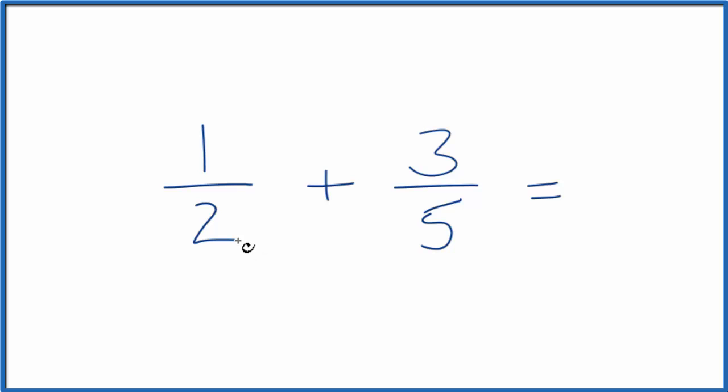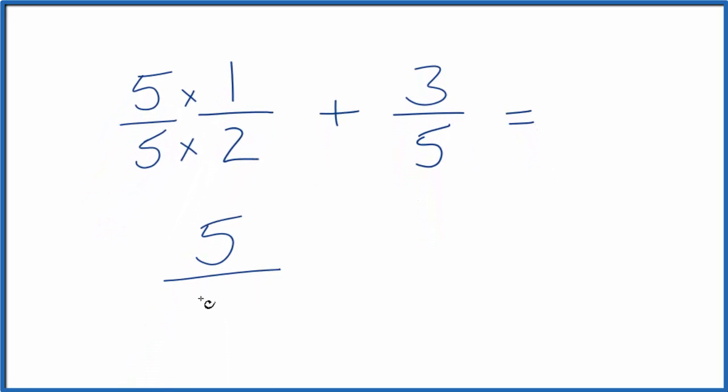I know that 2 goes into 10 and 5 goes into 10 evenly, so I'm going to multiply this side here by 5 over 5. 5 divided by 5, that's just 1, so I don't change the value, just how it's represented. But now, I have 5 times 1, that's the numerator, and on the bottom, 5 times 2, I have 10 as my denominator.